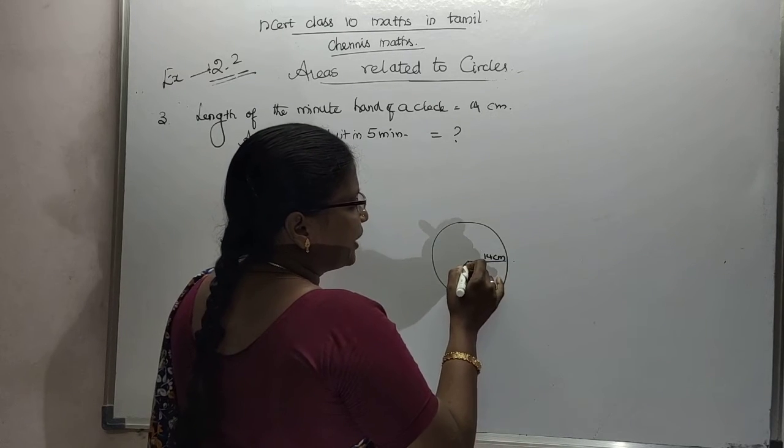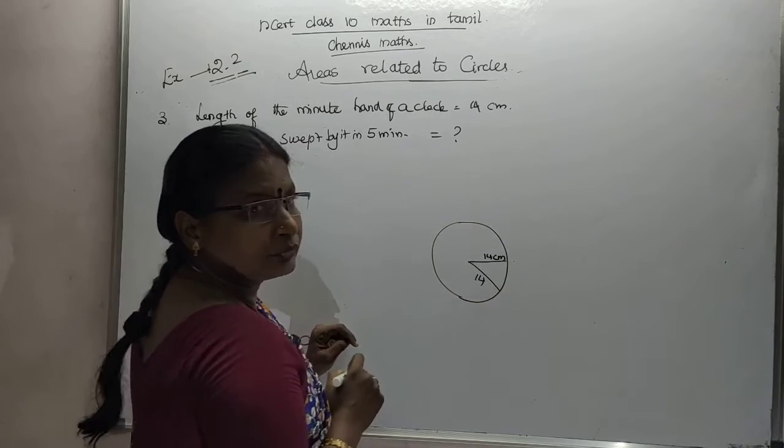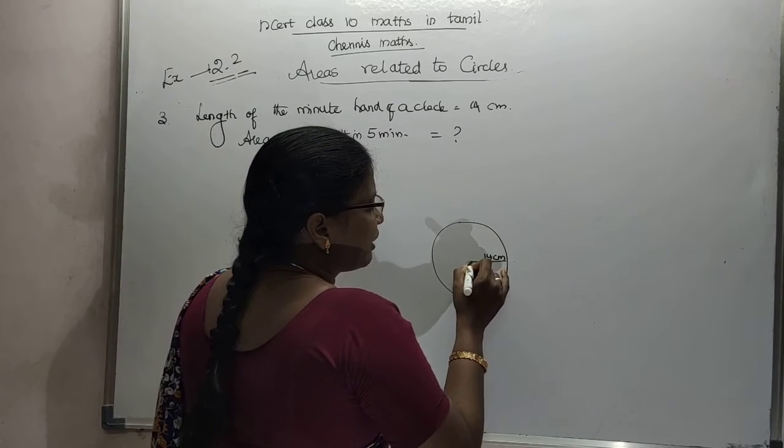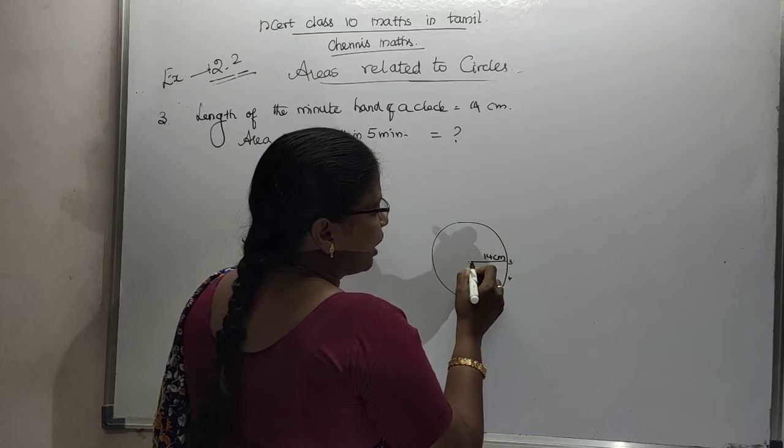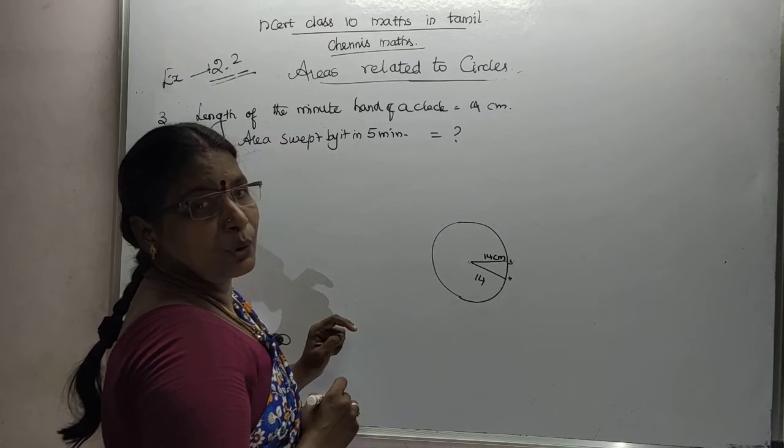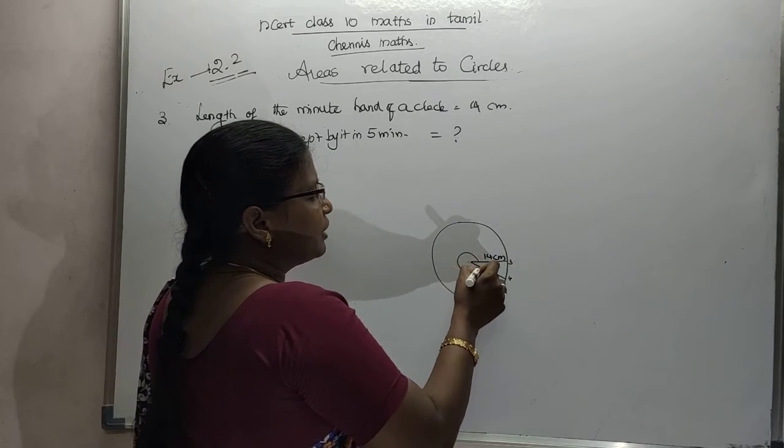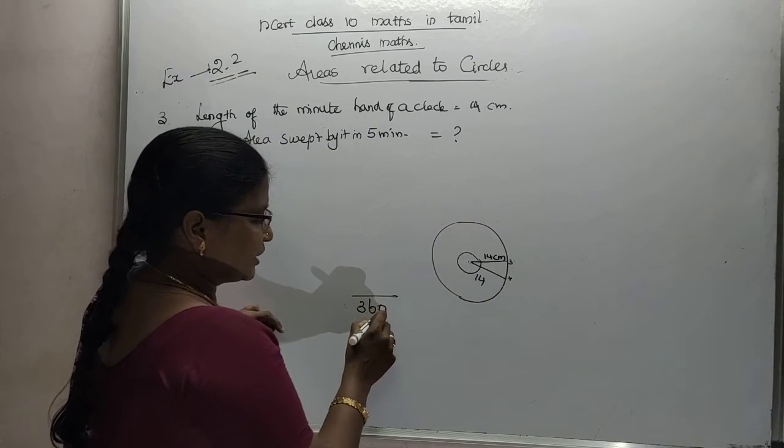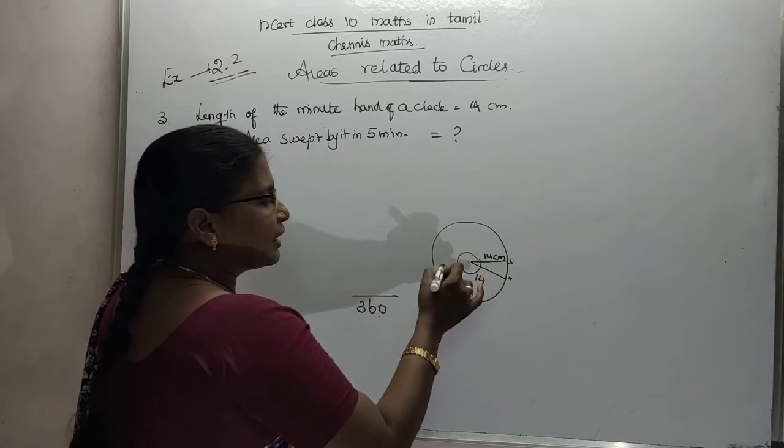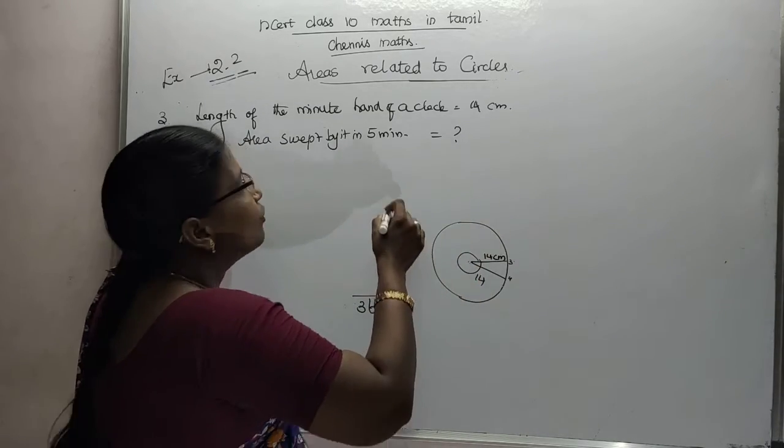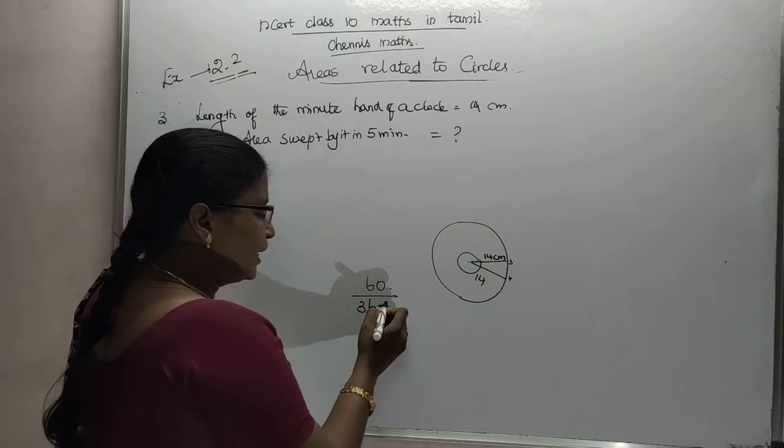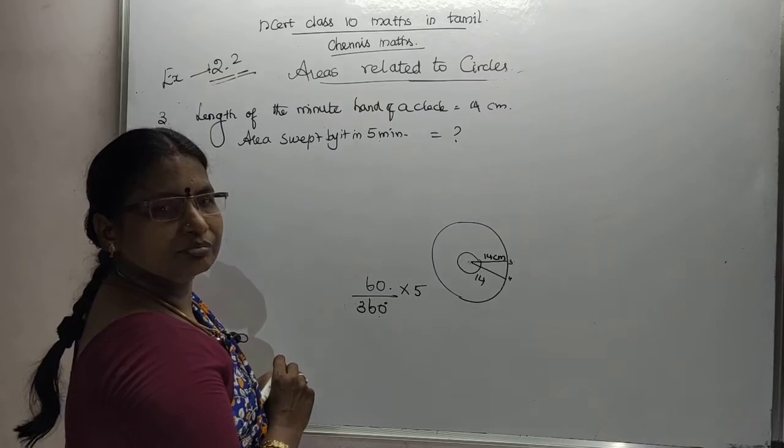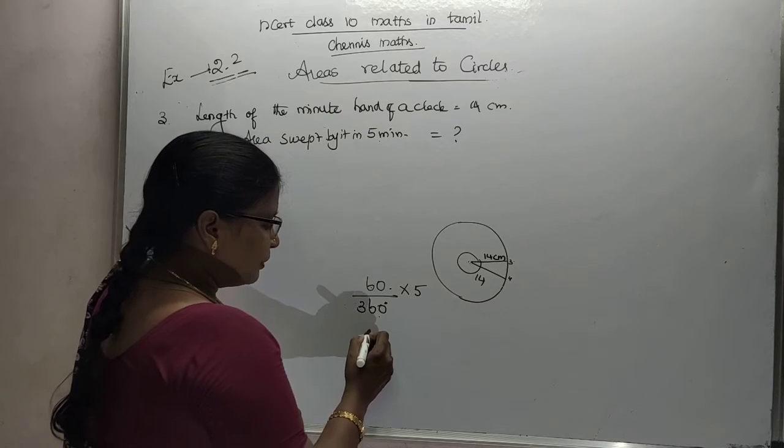Now this is a minute hand. In 5 minutes, how did the angle get? 360 degrees. It will rotate to 360 degrees. Now let's do it: in 60 minutes, 360 degrees.